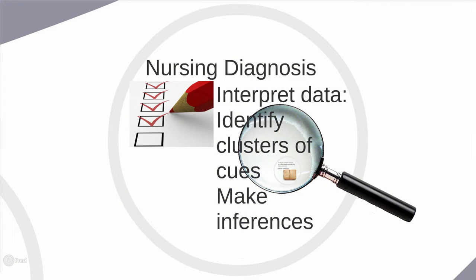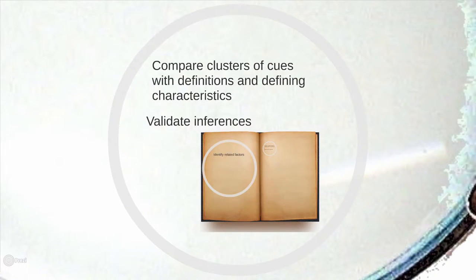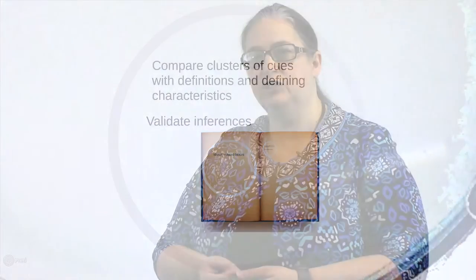That takes us to our next step: the nursing diagnosis. I'll have a whole other discussion just on what a nursing diagnosis is, but here we'll hit the high spots. What it does is enable you to collect data, bring everything together, cluster it, and look at what's related and what's not. Begin to make inferences on it. Then you go a little deeper and compare these clusters of clues — get definitions and defining characteristics — and really begin to understand what you're seeing and how to interpret it.